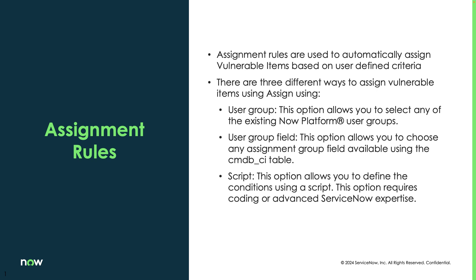Assignment rules are used to automatically assign vulnerable items based on whatever criteria you choose. There are three different types: one that uses a static user group — most commonly used as a default rule so any vulnerable item that doesn't meet assignment criteria always goes to a default group, which can then determine whether to adjust or create new rules.